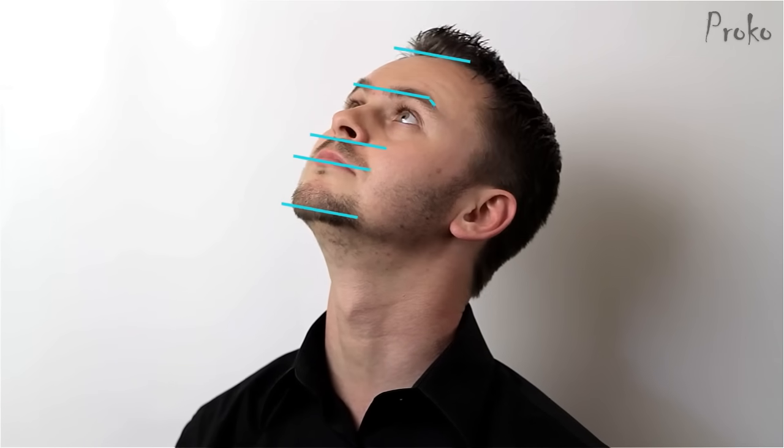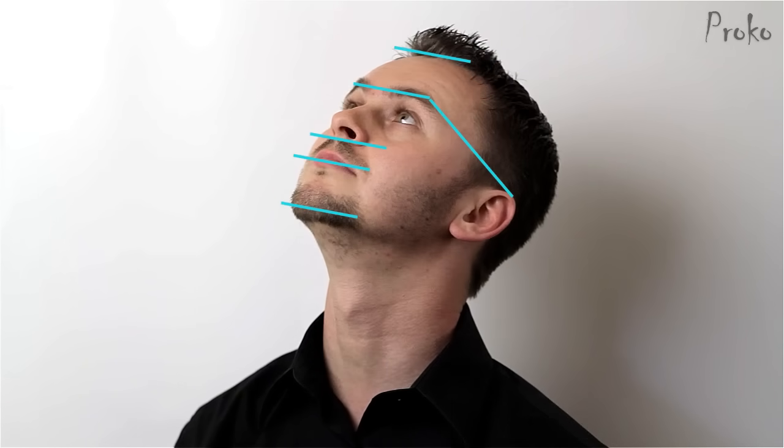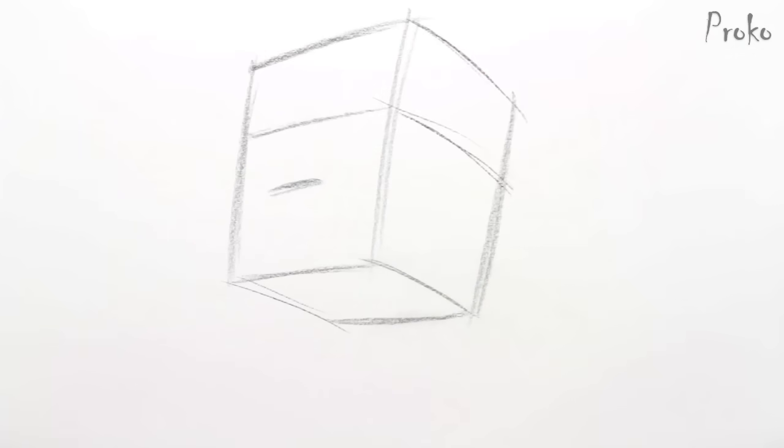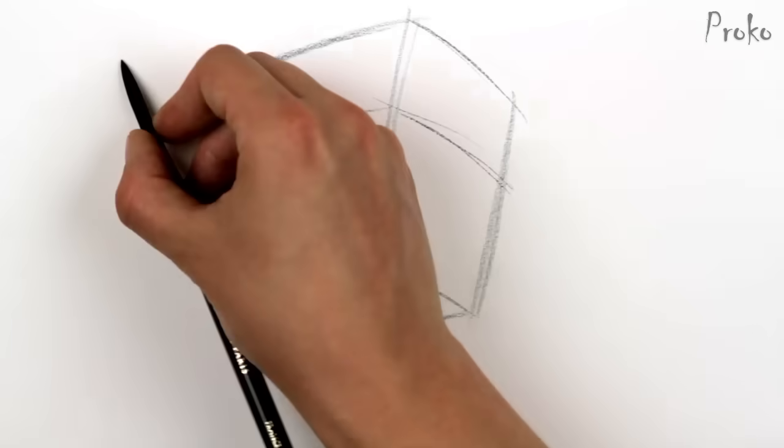The angle from the brow line to the ear is the same as the angle on the side plane of the box. These angles are really important because they establish the head as a three-dimensional form in space.